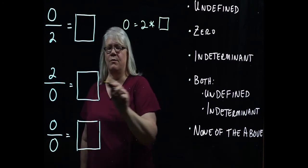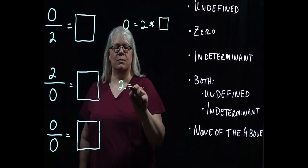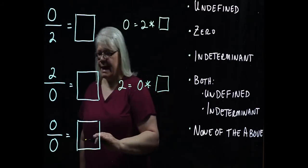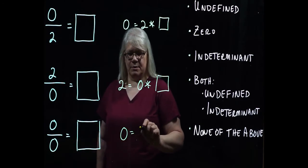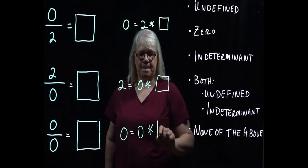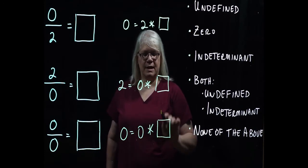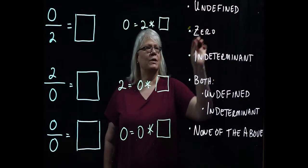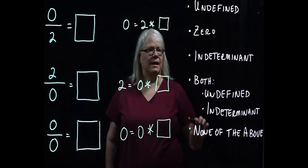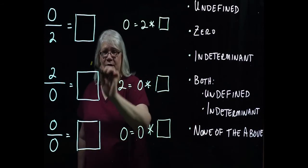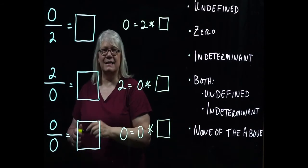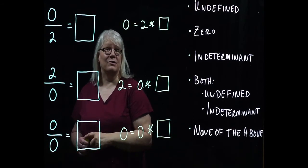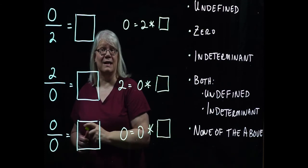So I'm going to rewrite this guy as zero equals two times box. This one, rewritten, will be two equals zero times box. And then this last one becomes zero equals zero times box. Now you need to think about what kinds of numbers can go in each of those boxes, then decide which of these cases it fits, and then we can conclude what the value of these ratios are. I'm going to give you about 15 seconds to see how far you can get, and then I'll come back and show you what I got.